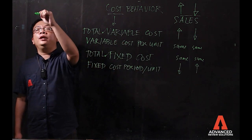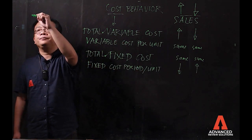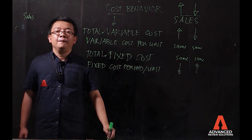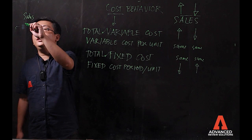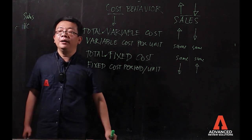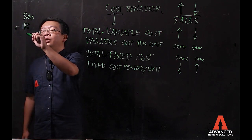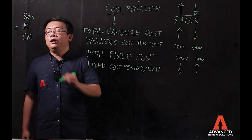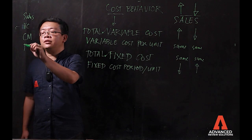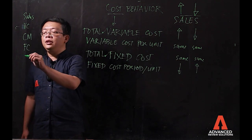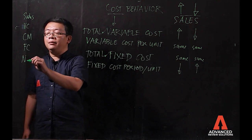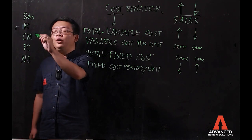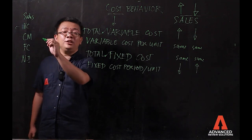Let's say you have your sales here. You have also your variable cost, your contribution margin, your fixed cost, and your net income. That's the formula in terms of your CVP analysis.